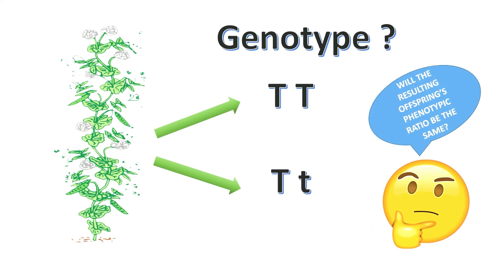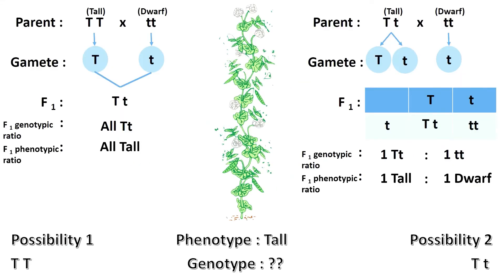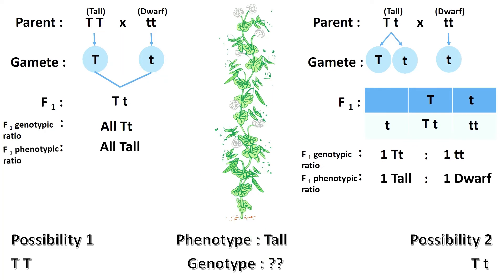Will the resulting phenotypic ratio of the F1 offspring be the same? No. If the mysterious individual is homozygous dominant (capital T, capital T), all of the offspring produced after a test-cross has been performed on it will have dominant phenotype, with a ratio of 1 tall to 1 dwarf.